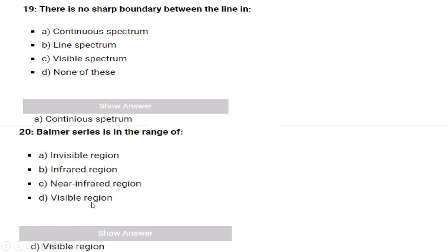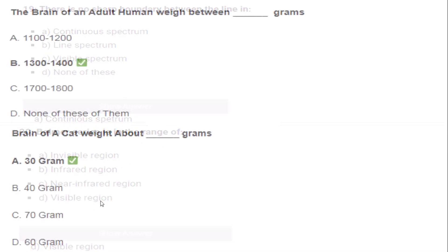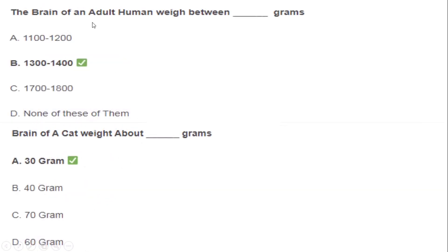The Balmer series is in the range of the visible region. The brain of an adult human weighs between 1300 to 1400 grams. The brain of an acute (newborn) weighs about 30 grams.